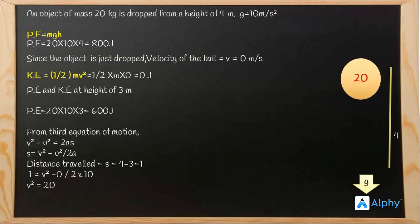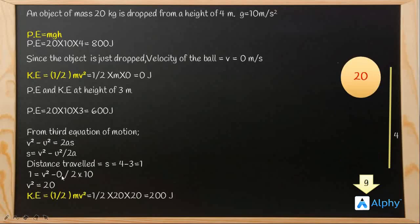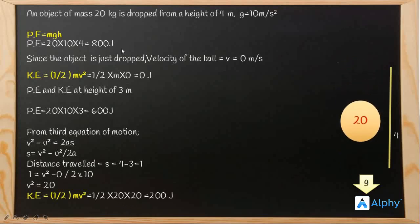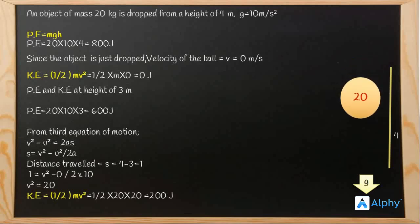Putting this into the formula for kinetic energy — half mv squared — we get: half × 20 × 20 = 200 joules. So the kinetic energy at 3 meters is 200 joules. That would be the end of the video. Thank you for listening.